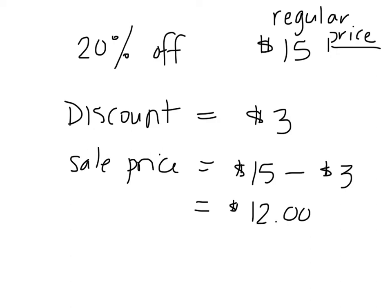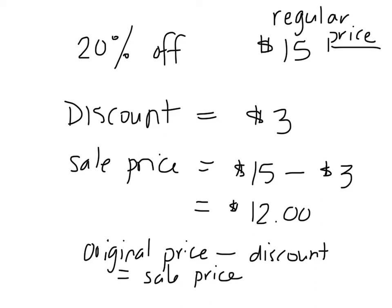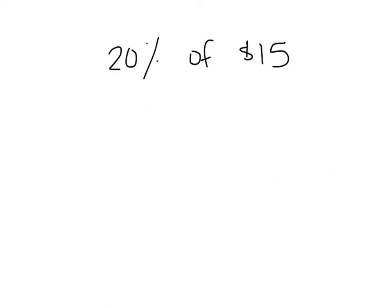So to find the sale price, we take the original price, and you subtract the discount. And that gives us the sale price. We can actually find the sale price in one step. Here you have to do two steps. You have to find the discount, and then we have to subtract that to get the sale price. I'm going to show you a shortcut to find the sale price. So looking at the same question, if I said to you, what's the sale price? If I just want to know the sale price, well, we know that you're saving 20% of $15.